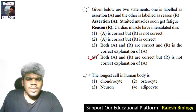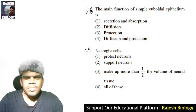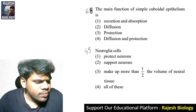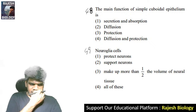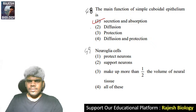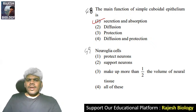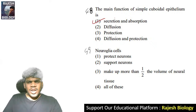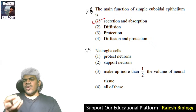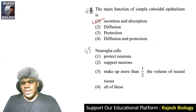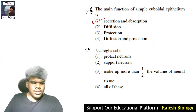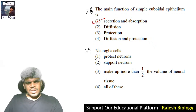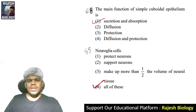Forty-seventh question: the longest cell in the human body is the neuron. Forty-eighth question: the main function of simple cuboidal epithelium is secretion and absorption — they secrete different types of secretions in glandular tissue and absorb essential amino acids and other things from primary urine in the nephron. Forty-ninth question: neuroglial cells — protect neurons, support the neurons, and more than 50 percent of neural tissue is neuroglia. The right answer is all of these.